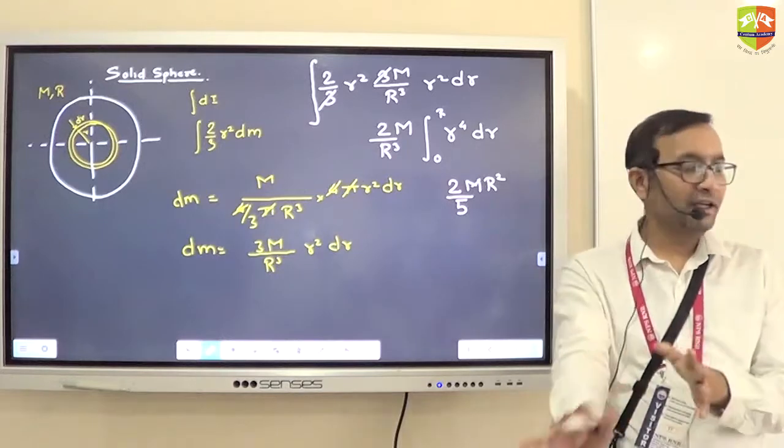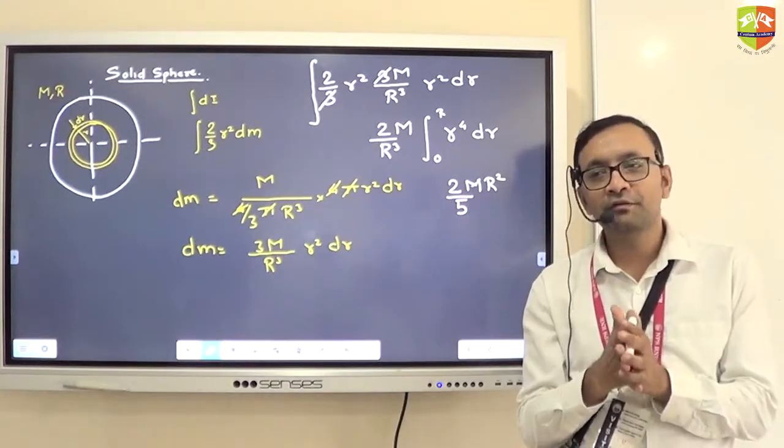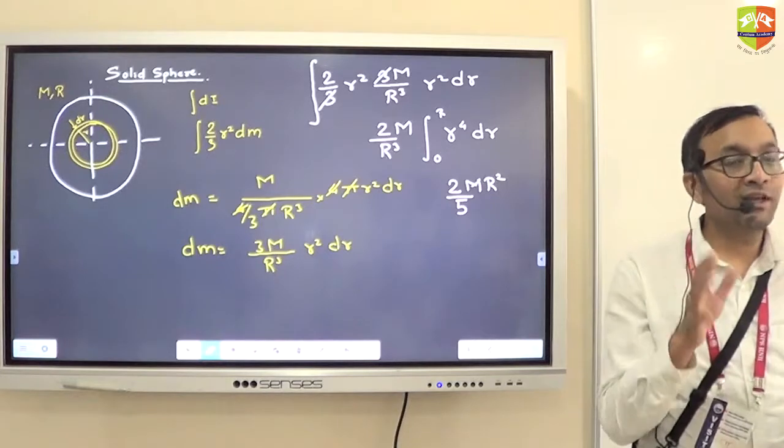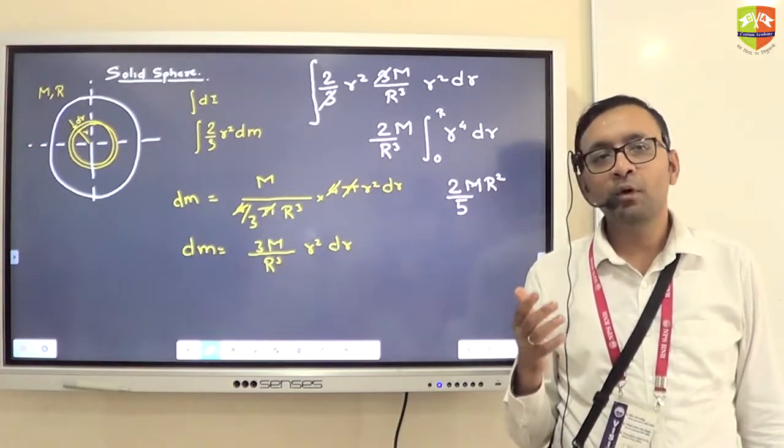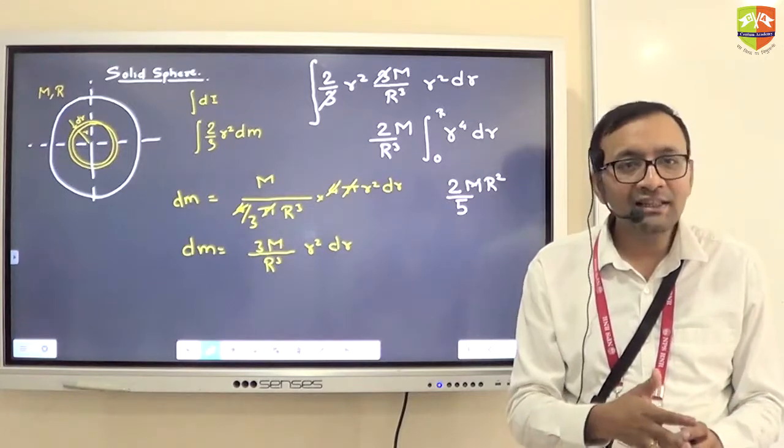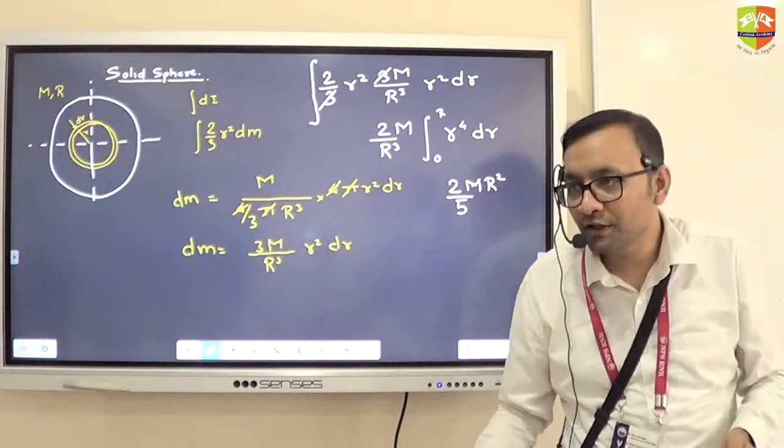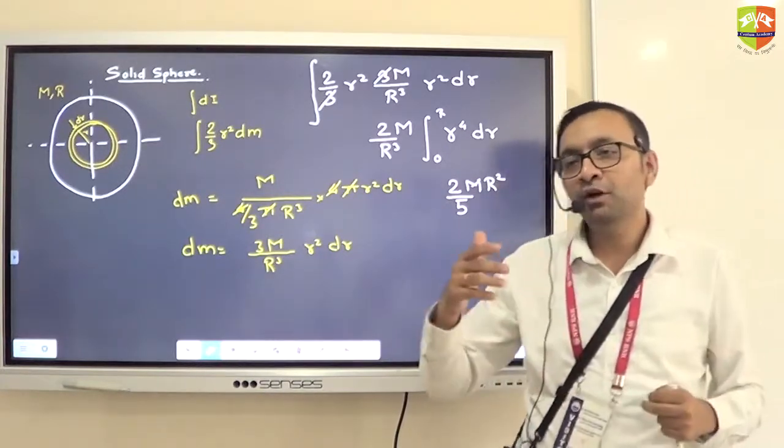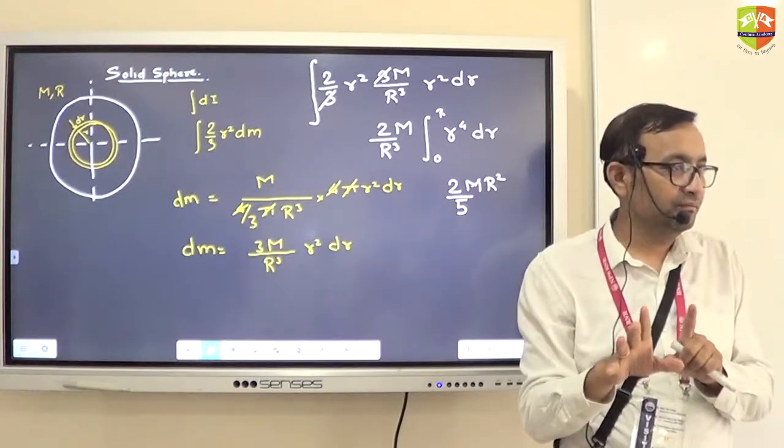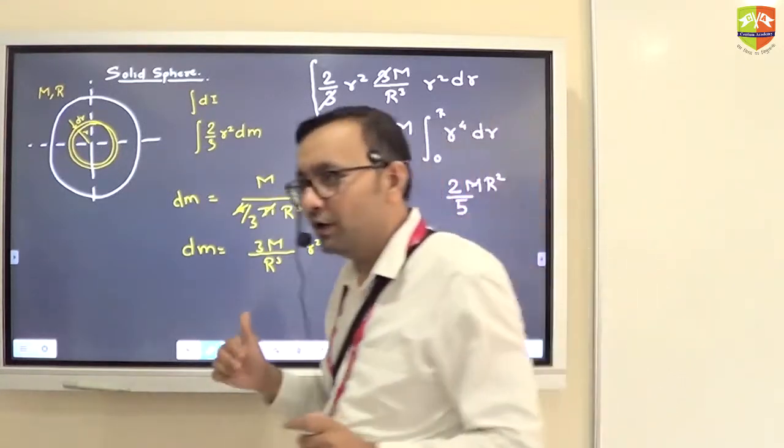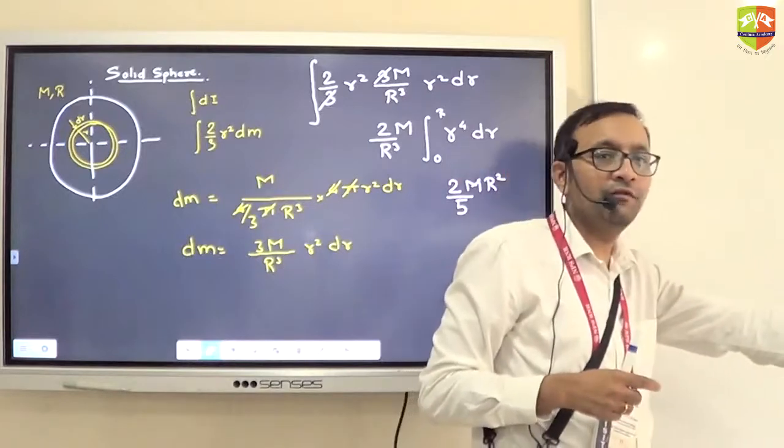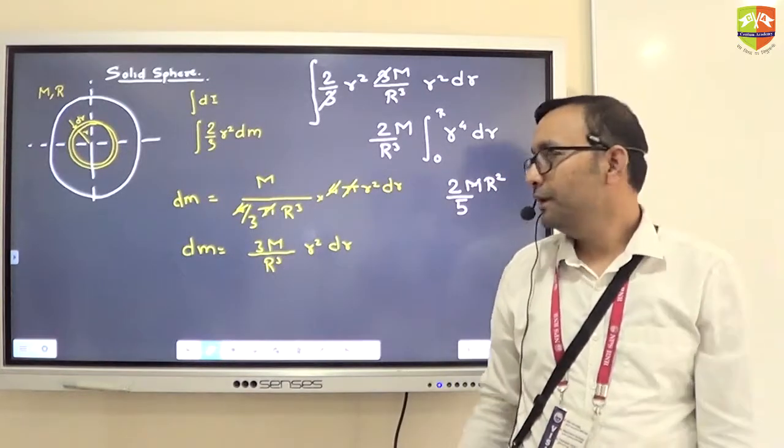So till now, we have done some basic integration to find out the moment of inertia of some regular shape objects. But what is the issue? The issue is that moment of inertia of different axis is different for the same object. So I can't just keep on integrating for the same object for different different axis and find the moment of inertia. So there has to be a way to find out moment of inertia of other axis knowing moment of inertia of one of the axis. So there should be a relation between the two axis. For that, we are going to learn two theorems which will relate moment of inertia of one axis with respect to the moment of inertia of other axis. Very straightforward simple theorems.